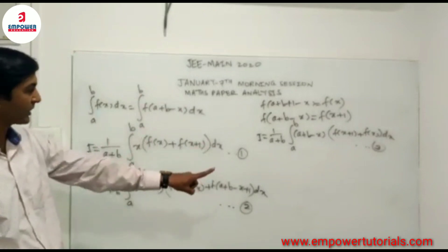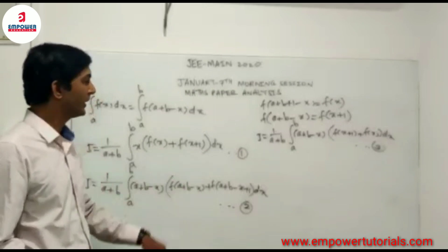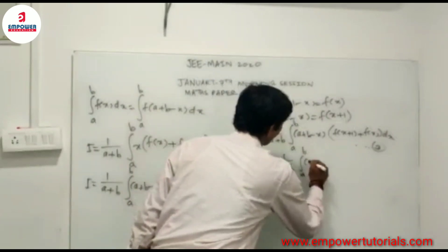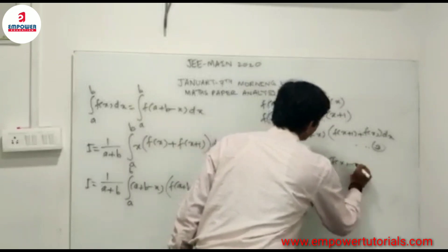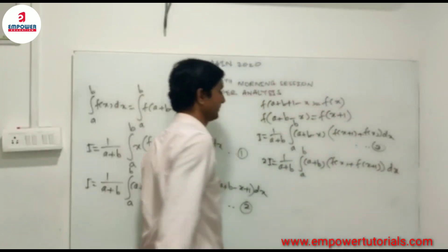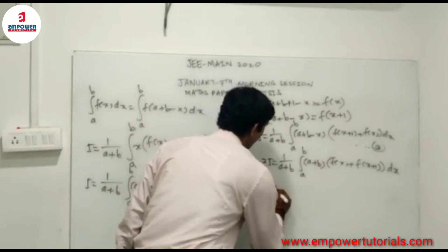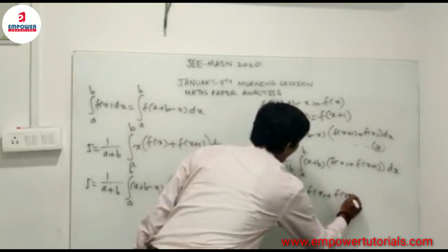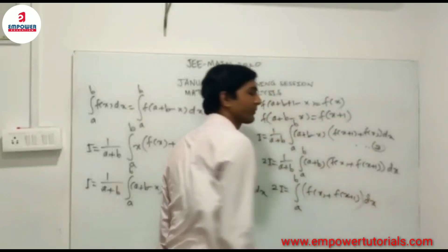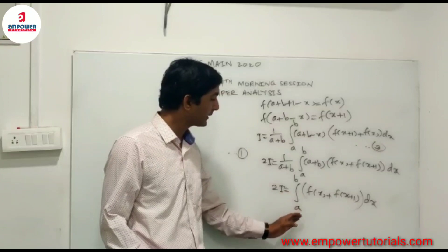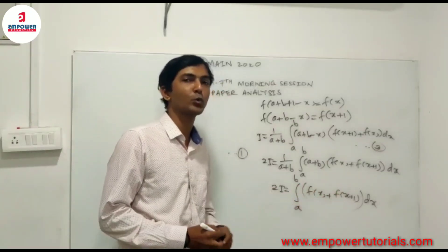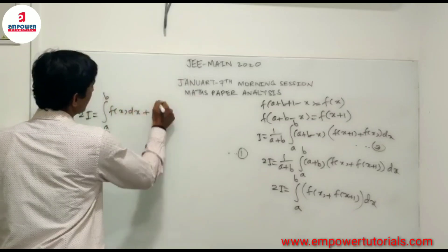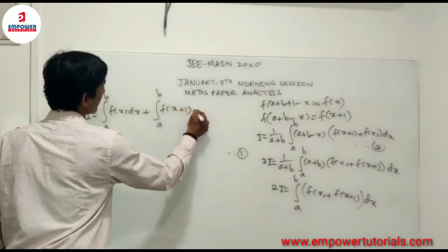Adding the first integral and the third integral — noting that 1/(a+b) is the common multiplier — we get 2I = 1/(a+b) times the integral from a to b of (a+b)·[f(x) + f(x+1)] dx. The (a+b) terms cancel, giving 2I = the integral from a to b of [f(x) + f(x+1)] dx.